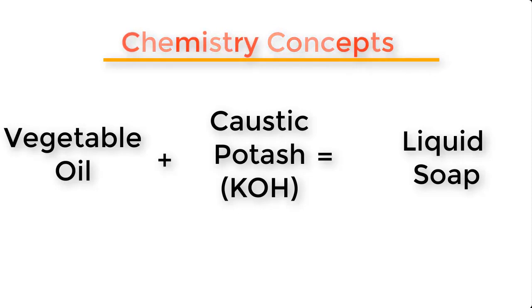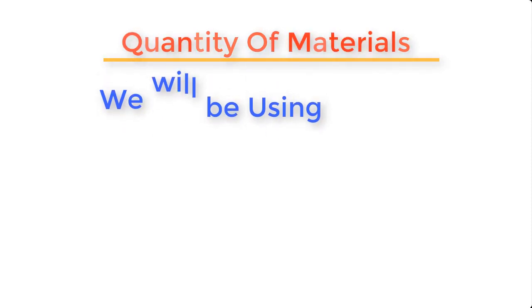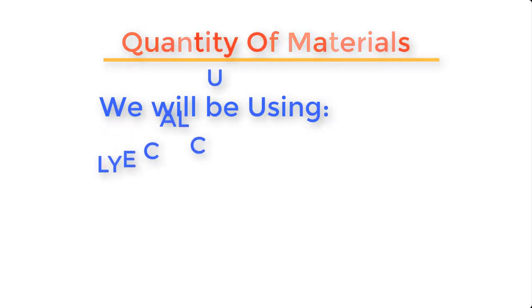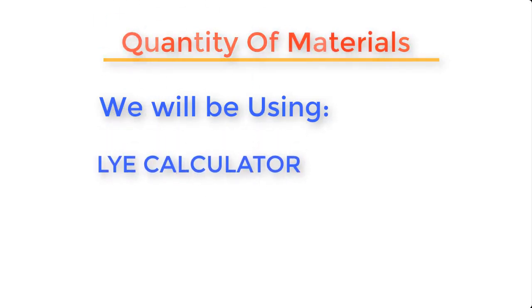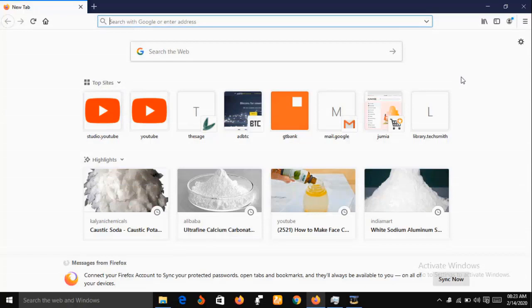Now having said this, the next thing we will do is find out the quantity of materials we are going to use for our production. In this preparation we are going to be using 900 ml by volume — which is about 830 grams by weight — of palm kernel oil. We are going to use the lye calculator to determine the amount of caustic potash and the volume of water required to dissolve it.